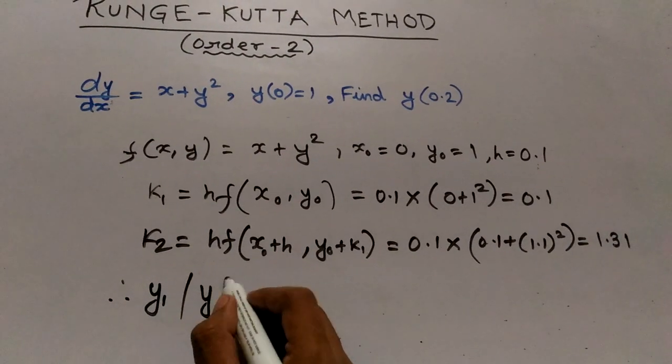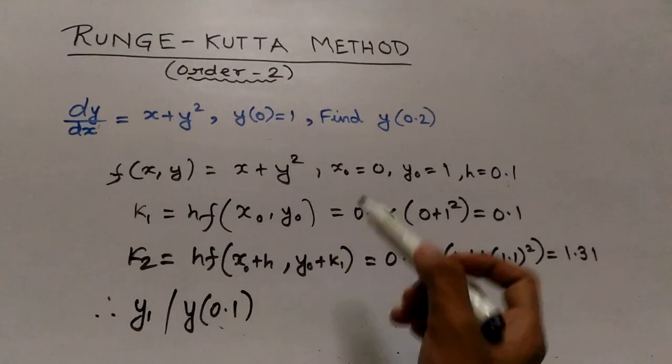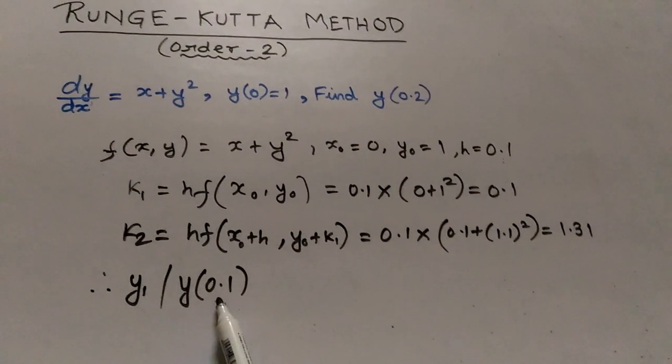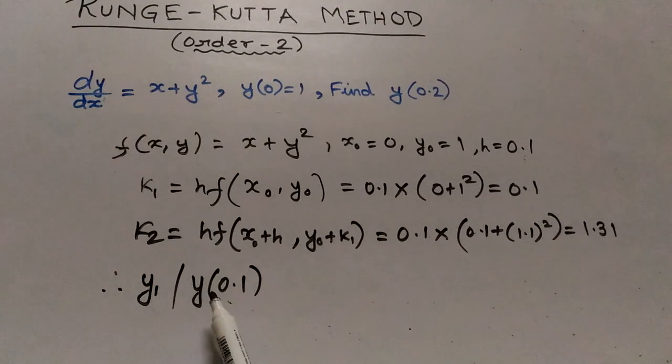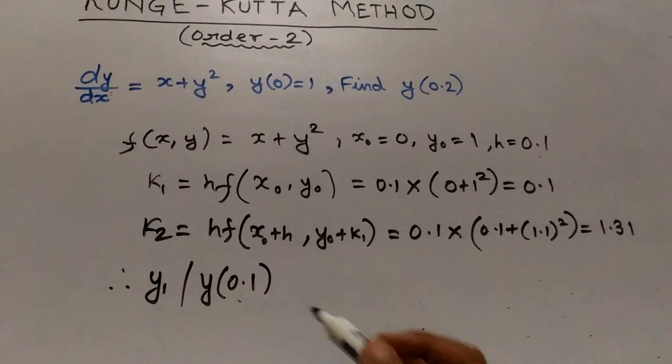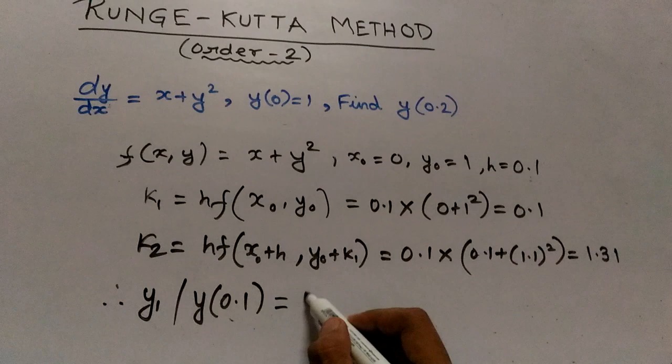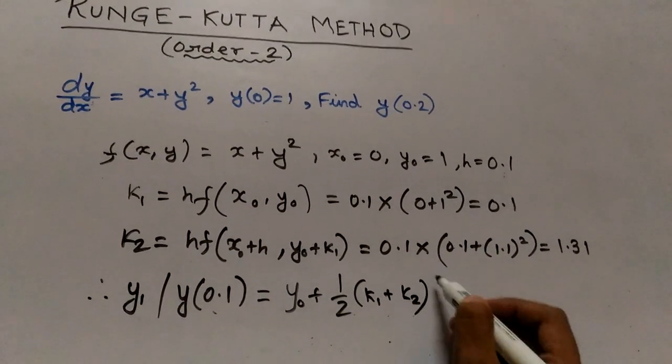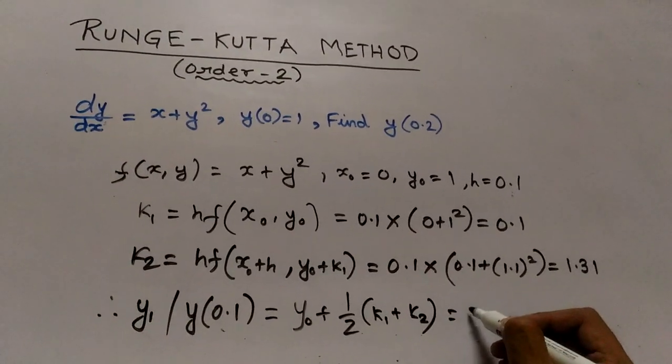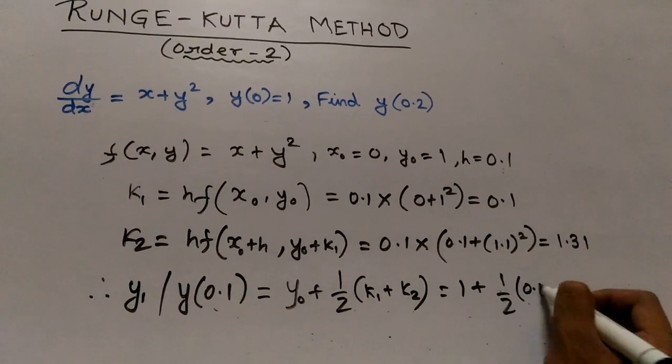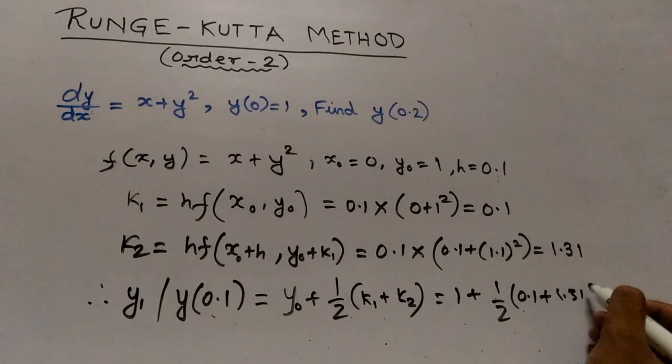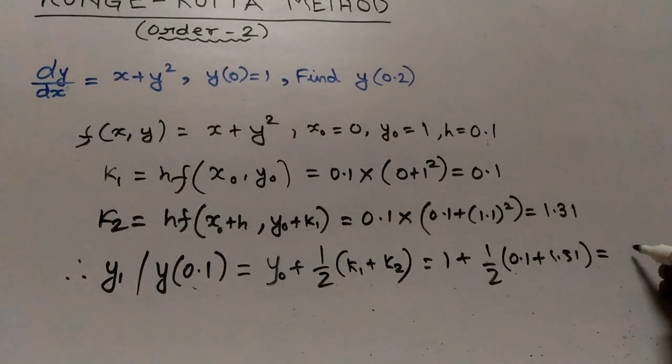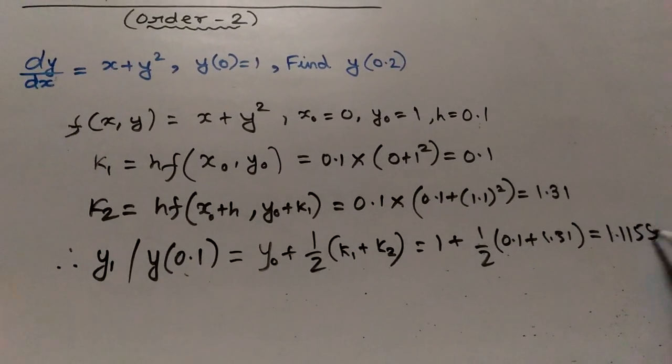It can be also written as y(0.1) because 0 plus 0.1 makes 0.1, therefore our x1 becomes 0.1. So our y value at x equals 0.1 will be y0 plus half K1 plus K2, that equals 1 plus half 0.1 plus 1.31, that is equal to 1.1155.